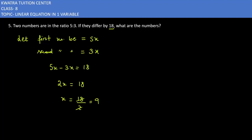We have to find out numbers, so first number is 5x. If you put x's value 9, then how much is it? 5 into 9 is 45.